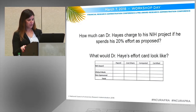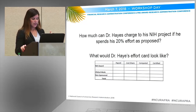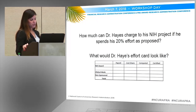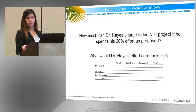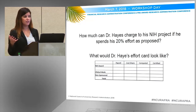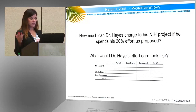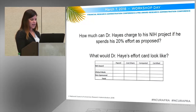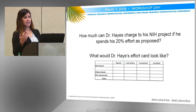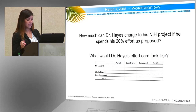So what would his effort card look like? His NIH project salary — that calculated amount of 20% of the cap, which was $37,920 — actually only represents 12.64% of his actual salary. So to get to that 20% effort he's committing, you take the difference between that 20% and the 12.64%. That plug, which is the cost share, is represented on the effort card as 7.53%, or $22,080.